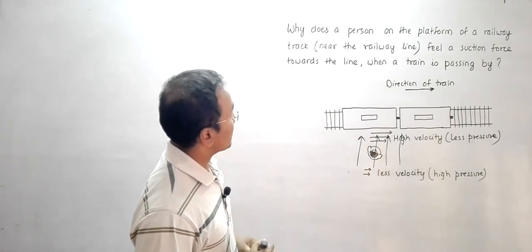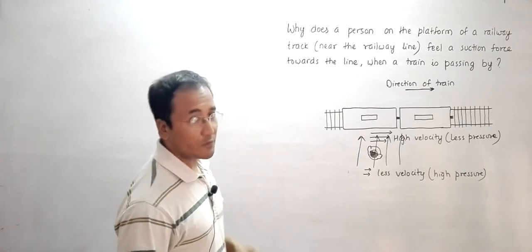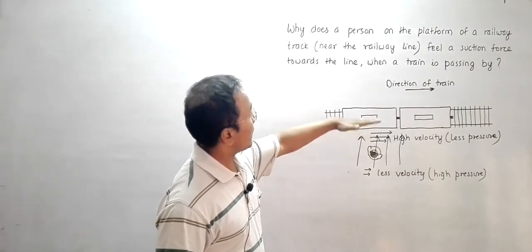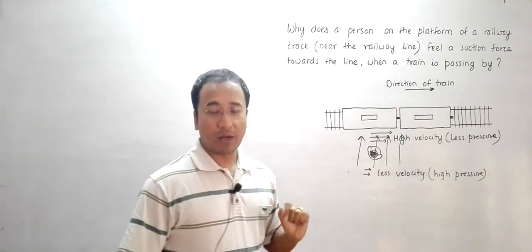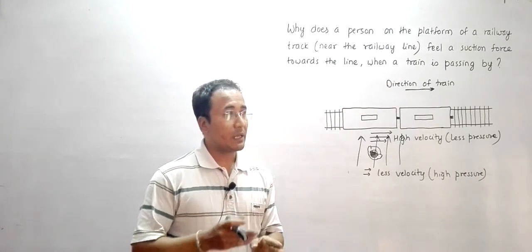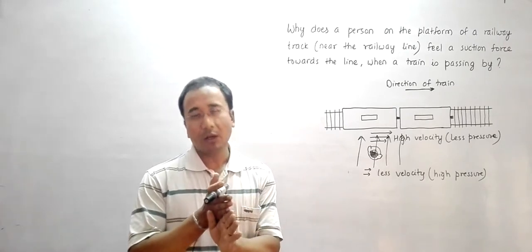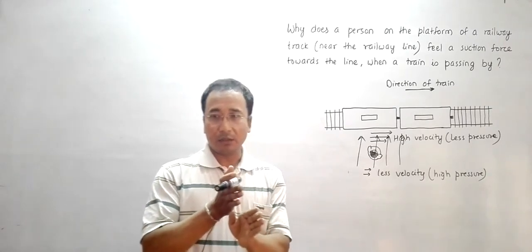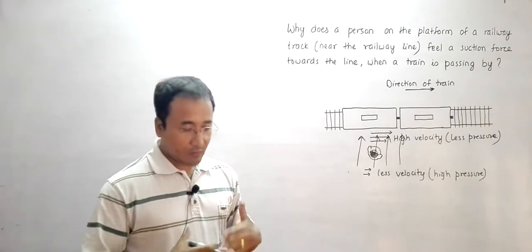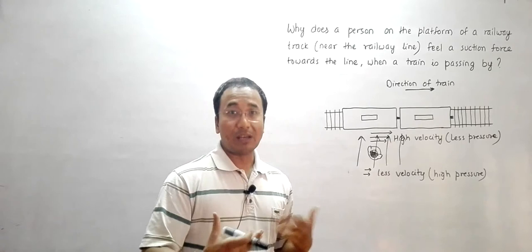So we have a person on the railway track and why does that person feel a suction force, a sort of absorbing force towards the line when a train is passing by? It's our usual observation, especially when we are at the side of a railway track or maybe beside a road where a heavy vehicle is passing by. We feel a force towards the vehicle. So why is that so?